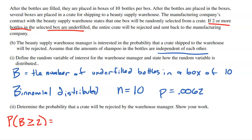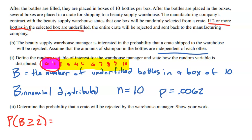The options for B are 0 through 10. Rather than summing P(B=2) through P(B=10), we find the complement — the probability of zero or one underfilled bottle (which is the 'not rejected' scenario) — and subtract from 1. So we compute: 1 − [P(B=0) + P(B=1)].